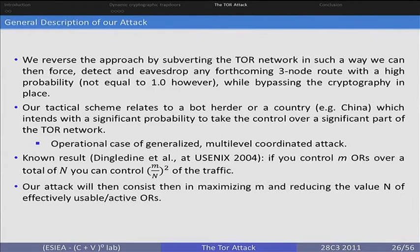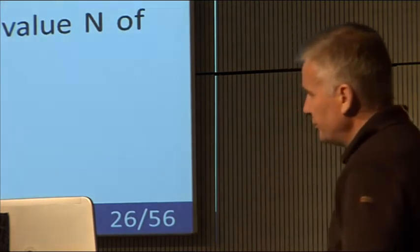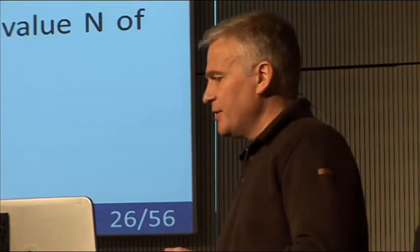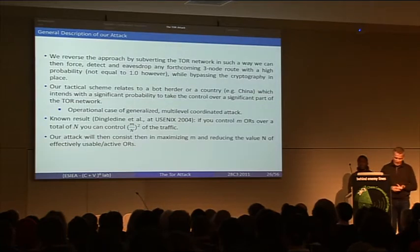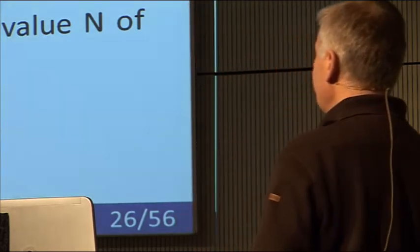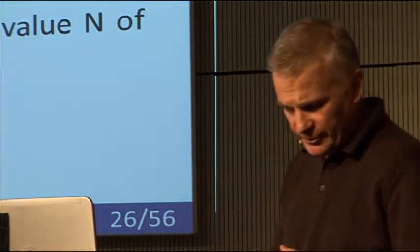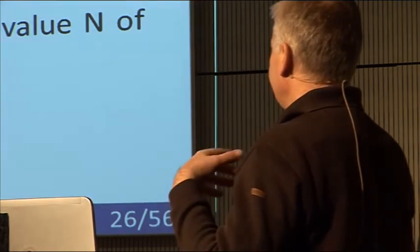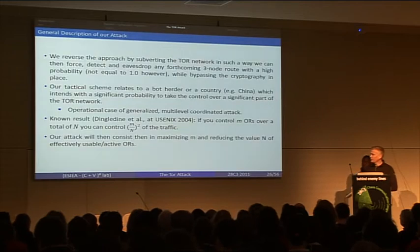From a very general point of view, we just select some weak nodes — the weakness issue may depend on your view — and we try to force the route through those infected nodes. According to Dingledine-Edson authors, there is a general interesting formula: if you control M onion routers of a total of N, you can control this percentage of the traffic. So the aim is to increase the value of M and to reduce in a way or another the value of N. So we will infect M onion routers, and then we will try to decrease the value of N — the number of onion routers through which you can go effectively.